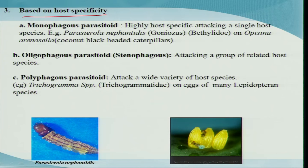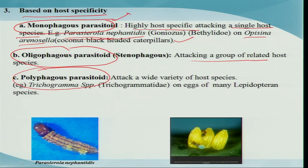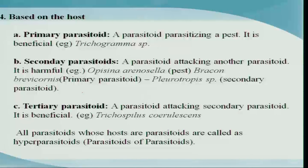Based on host specificity, parasitoids can be classified as monophagous, oligophagous, or polyphagous. Monophagous parasitoids are highly host-specific, attacking a single host species — for example, Parasierola nephantidis, which is a monophagous parasitoid on Opisina arenosella, the coconut black-headed caterpillar. Oligophagous parasitoids have a restricted group of related host species. Polyphagous parasitoids attack a wide variety of host species, such as Trichogramma — the egg parasitoid we discussed. For a successful biocontrol program we must choose the appropriate type of parasitoid.